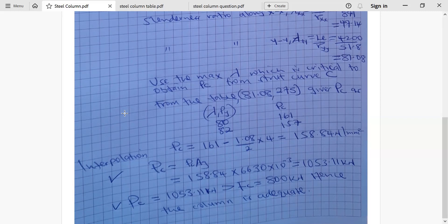Now, from there, we can compute compressive strength capital PC, which will be pc obtained from the table multiplied by the cross-sectional area of our section, which is 158.84 times 6630 millimeters squared, times 10 power negative 3 to change it to kilonewton. Now, since our compressive strength, what the section can carry is 1053 and the applied load is 800, we say the column is adequate because it can carry 1053 and it's being subjected to 800.